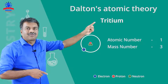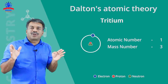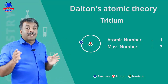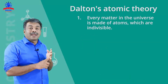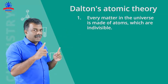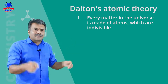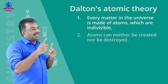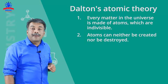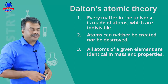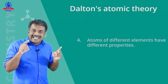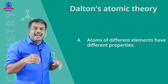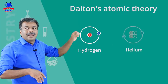Now let us discuss Dalton's postulates. We will accept the problems with Dalton's third postulate, such as atomic number 1 and mass number 3. First postulate: every matter in this universe is made up of the smallest indivisible particles known as atoms. Second: atoms can neither be created nor be destroyed. Third: atoms of the same element are identical in all respects. Fourth: atoms of different elements have different properties — they are non-identical. Hydrogen and helium atoms are entirely different.